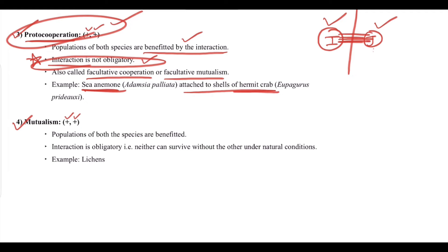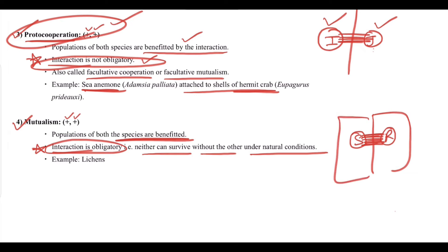Next we have mutualism, in which both species are benefited but the interaction is obligatory. That is, neither can survive without the other under natural conditions. They have to live together if they want to survive. If we keep them alone or independent of each other, they will not survive. That denotes mutualism. So interaction is obligatory. For example, lichens.